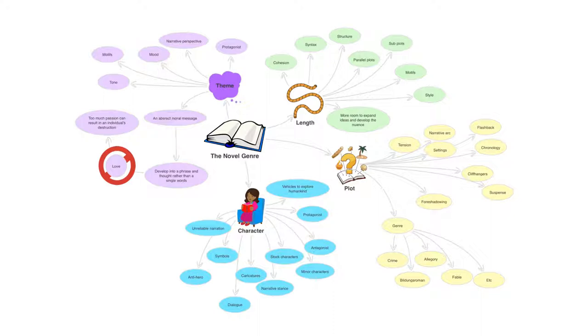So if we put all of these together, the length, the plot, the character, and the themes explored, that is really what distinguishes a novel from other types of writing. So when you're looking at the genre of novels, they're kind of the features that build that text type up.